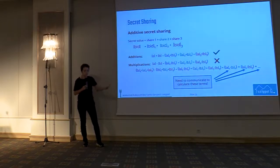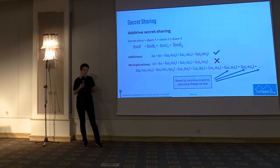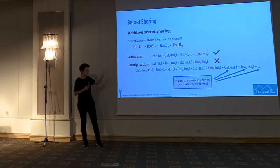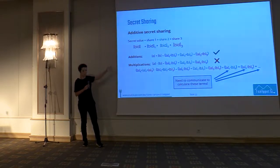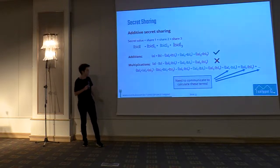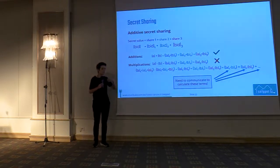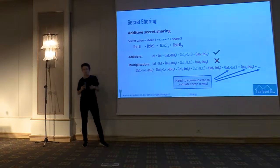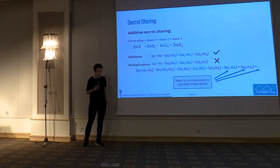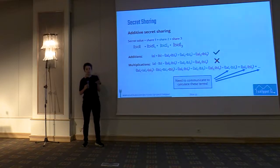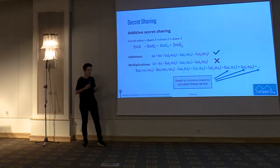This means MPC has the problem of being rather communication-heavy. Every other calculation — comparisons or anything else we want to compute — will be based upon these two basic operations and will usually be more expensive. For multiplications we need one communication round between parties, but for comparisons there are seven communication rounds. So we have to be very careful with how we design the algorithms so they don't become too slow.